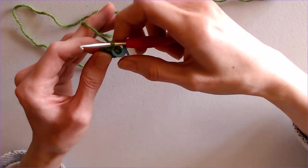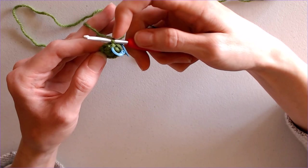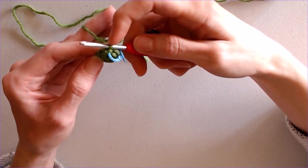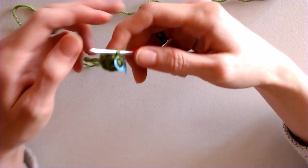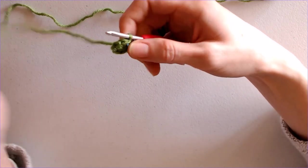A lot of other methods had you do this backwards loop slip, then chain one, and then just continue going. But I found that that actually still gave me quite a bit of a seam and I didn't like that.